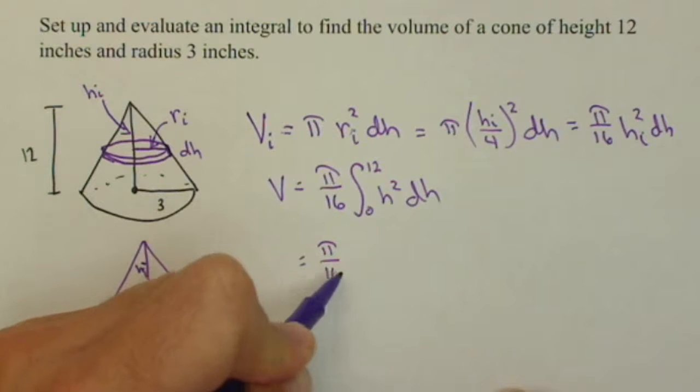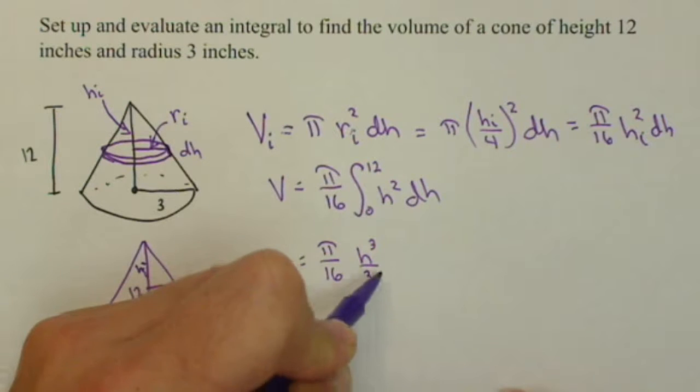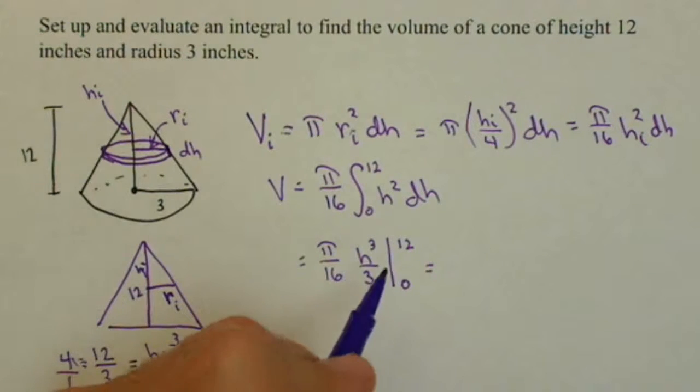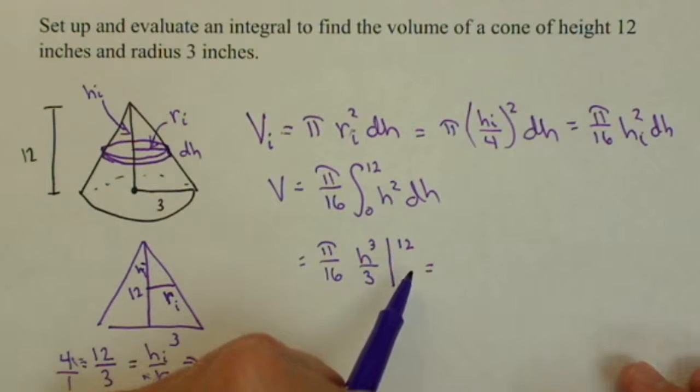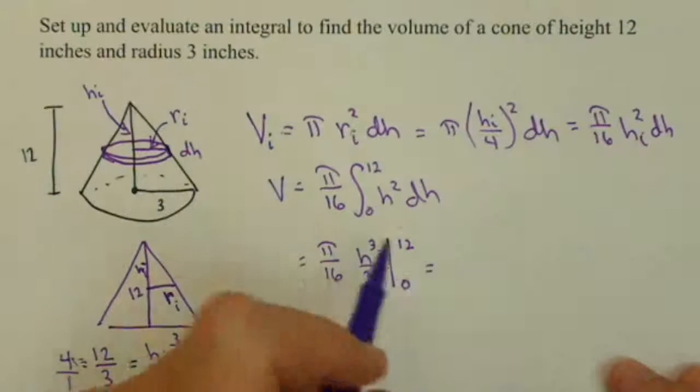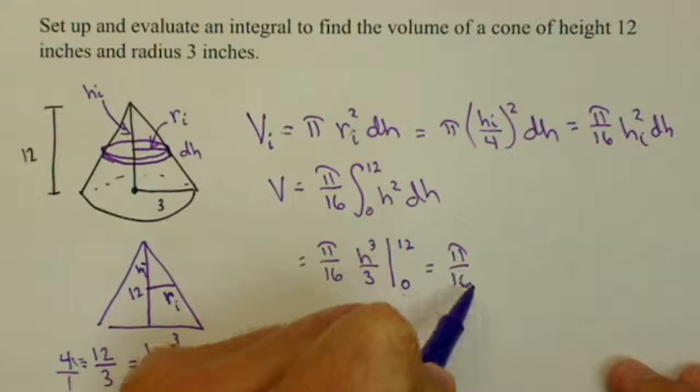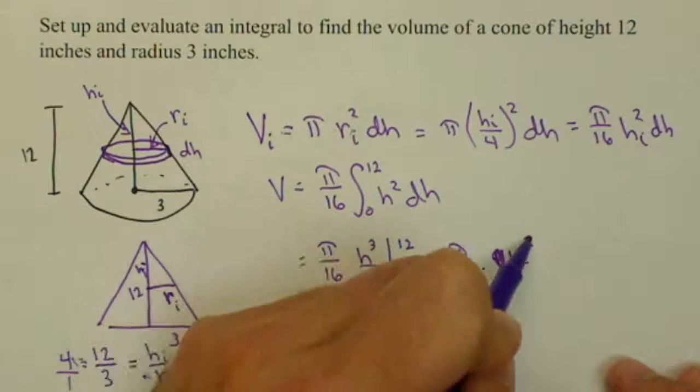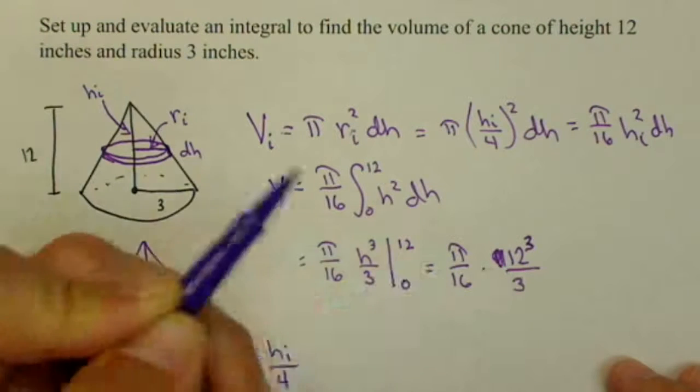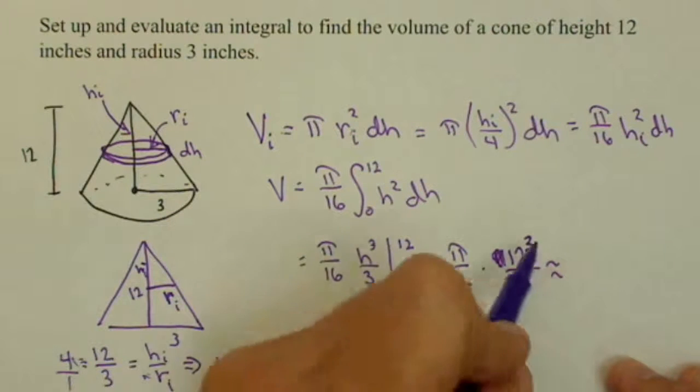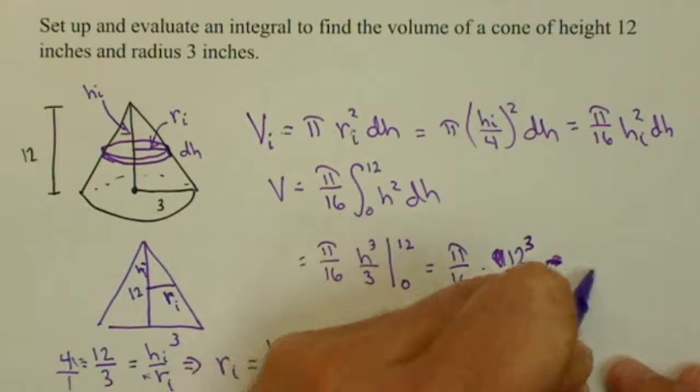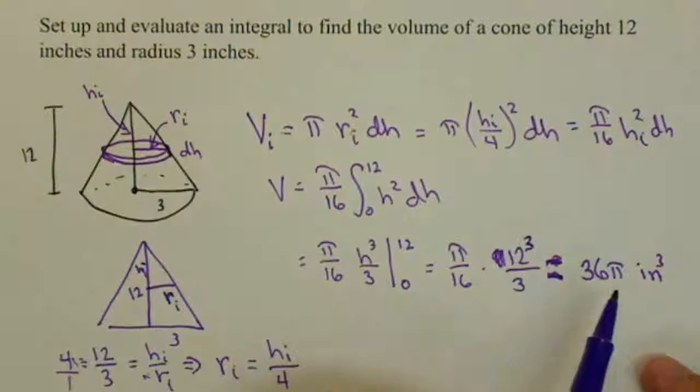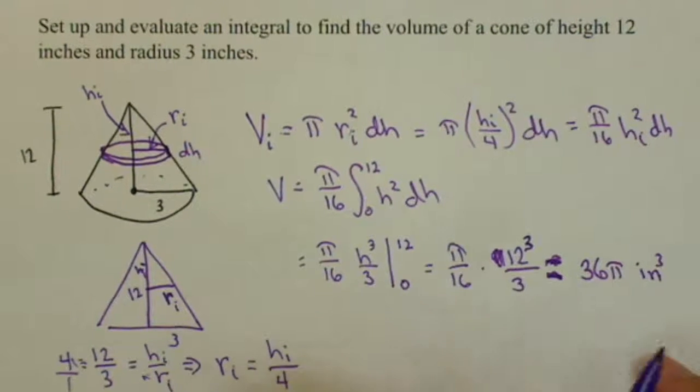And so, we get pi over 16 times H cubed over 3 from 0 to 12. We don't need to worry about putting in the lower limit because 0 is going to zero out the whole thing. So, when we do this, we get pi over 16 times, not 11, excuse me, 12 cubed over 3. Which, if you calculate this, is not approximately, it's exactly 36 pi cubic inches. And if for some reason you need the decimal approximation, just calculate the 36 pi.